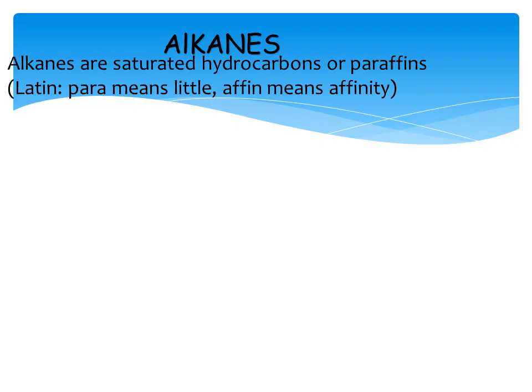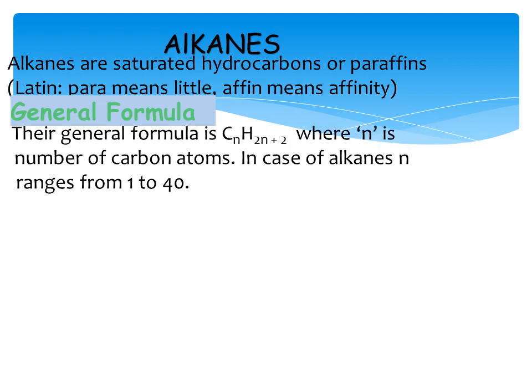Para means 'little' and affin means 'affinity.' As far as the general formula is concerned, alkanes are always represented as CnH2n+2, where n stands for the number of carbon atoms and the value ranges from 1 to 40. So when you have C1, that means 2×1+2=4, so if carbon is 1 then 4 hydrogens should be there.